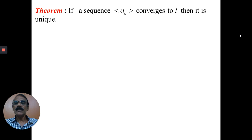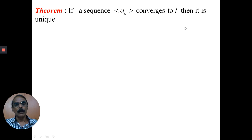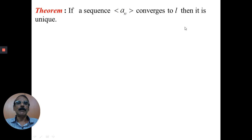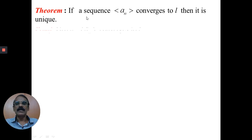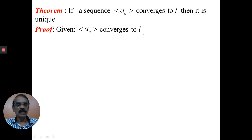Let us prove the theorem now. The statement is: if your sequence an converges to l, then it is unique. Whenever you want to prove a theorem or solve a problem, first of all we should know what is given — that is the hypothesis — and we should know what is to be proved. So what is given here? We are given that the sequence an converges to l. What we have to prove? We have to show that this l is unique.